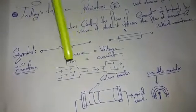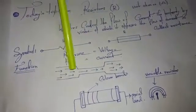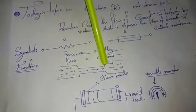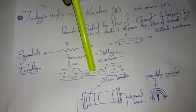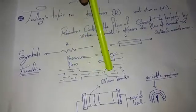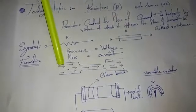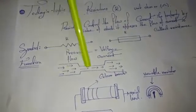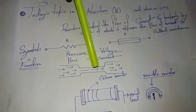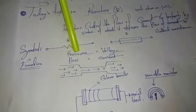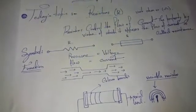We can talk about the resistance using a water flow analogy. The water flow is given in a pipe. When the water flow is given through the pipe, the diameter of the pipe controls the flow — similar to how resistance controls current flow in a circuit.